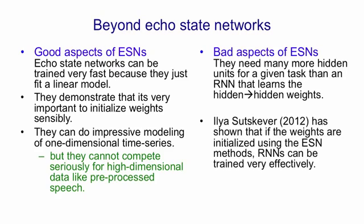Recently, Ilya Sutskever tried something which is fairly obvious: to initialize a recurrent neural network using all the tricks developed by the people doing echo-state networks. Once you've done that, you know you could learn quite well just by learning the hidden-to-output connections. But then presumably you could learn even better if you also learned to make the hidden-to-hidden weights better. So Ilya tried using the echo-state network initializations but then training with backpropagation through time. He used RMSProp with momentum and discovered that that is actually a very effective way to train recurrent neural networks.